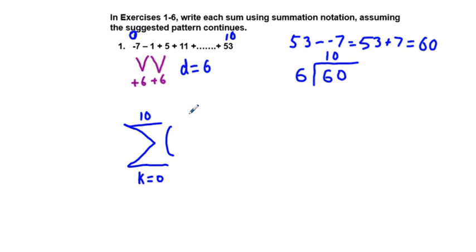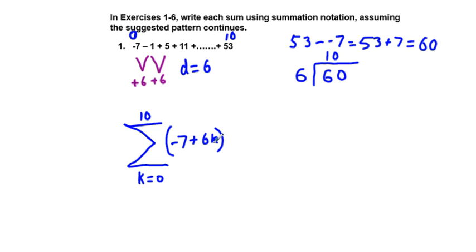We put our starting amount, which is negative 7, and add to that 6 times k. If we plug in k=0, we get negative 7, because 6 times 0 is 0, plus negative 7 is negative 7 — that's our first term. For k=1, we have negative 7 plus 6 times 1, which is negative 7 plus 6, which equals negative 1. So the rule follows.